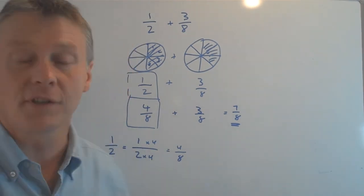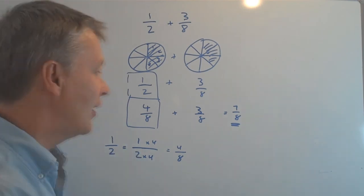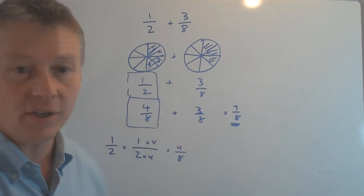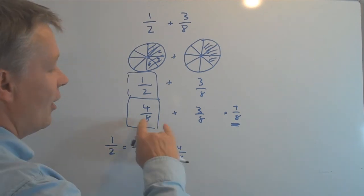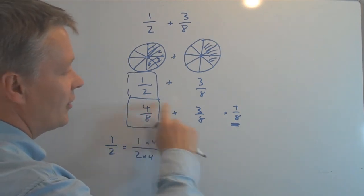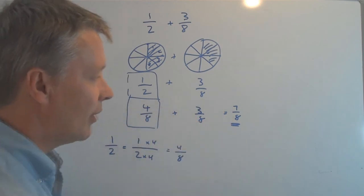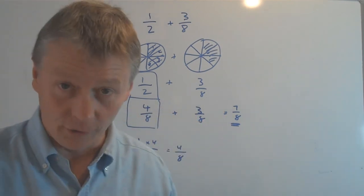And the principle, the overriding principle of adding fractions together, is to make sure these numbers are exactly the same at the bottom. So that will allow me then to add the two top numbers, the numerator, and produce my final calculation.